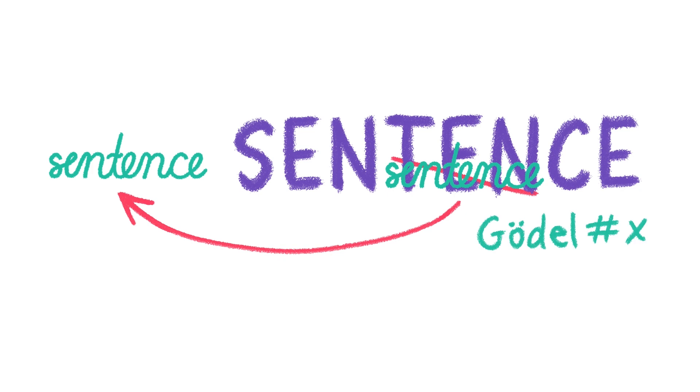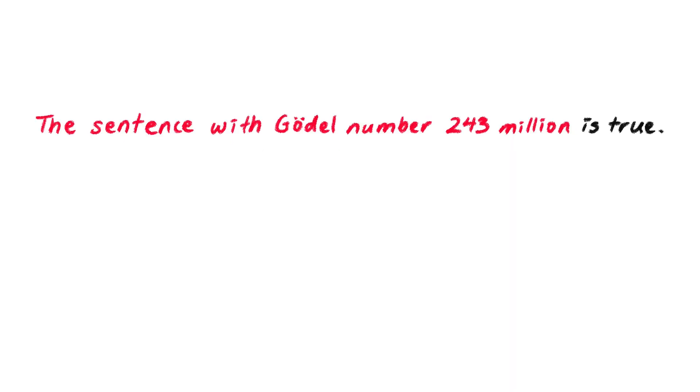Now Gödel could write sentences that refer to other sentences by using their assigned number. For example, the sentence with Gödel number 243 million is true means zero equals zero is true.